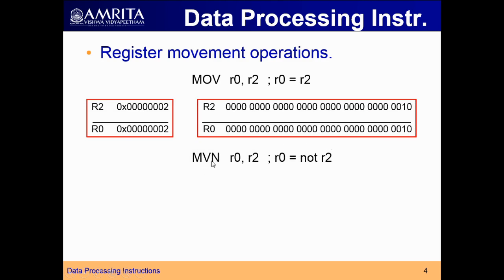There is another instruction called MVN — MOVE Negative or MOVE Negate. In normal MOVE, you move the content of R2 to R0. But in MOVE Negative, you perform NOT of R2, that is the complement of R2, and that result is moved to R0. So negation or complement operation is done on R2 and the result is moved to R0.